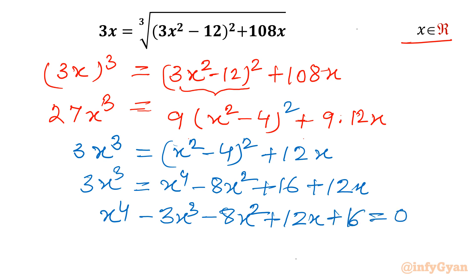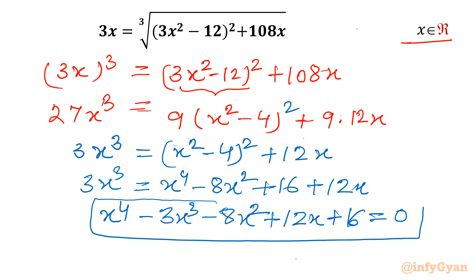This is a quartic equation. If you look at the coefficients, it can be easily converted into a reciprocal equation. So let us divide this equation by x². Since if x = 0 then the left hand side gives 16 and right hand side is 0, x = 0 is not a solution, so we can safely divide by x².